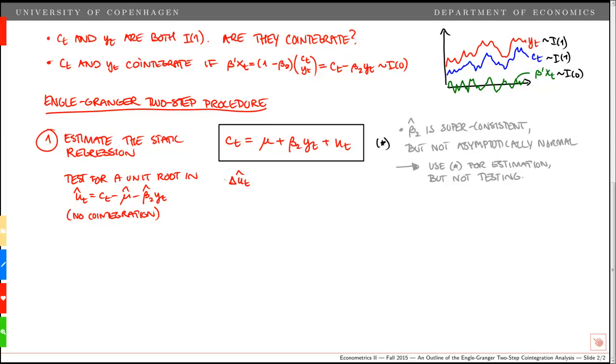We specify a model for the change in ut hat. We include the lag level, and then we include a number of lagged first differences, coefficient ci, and then we have delta ut minus i hat. Finally, we have a residual term epsilon. Note that we have no constant term because from the static regression star up here, we know that the estimated residual by construction has a mean of zero. So we don't include a constant in the next equation, the ADF test.